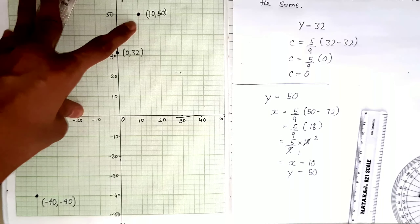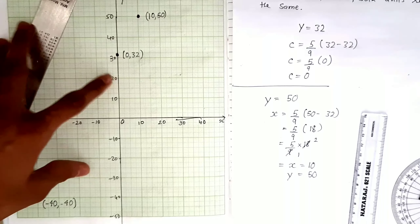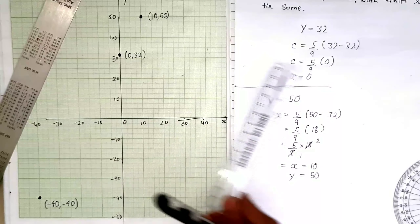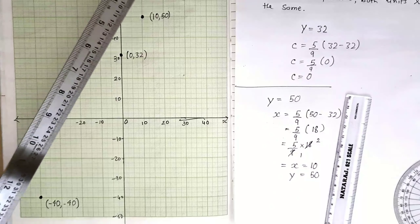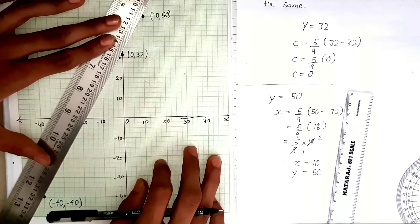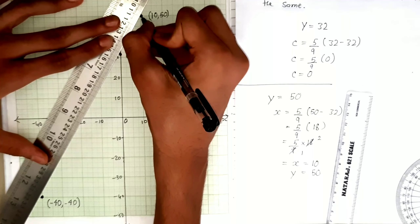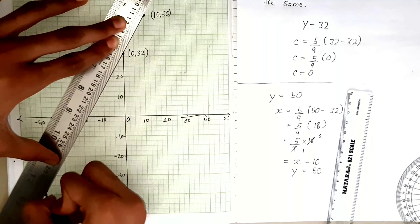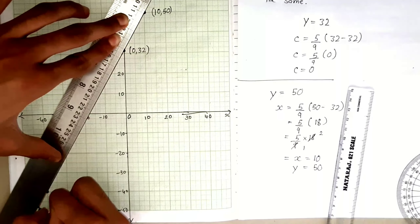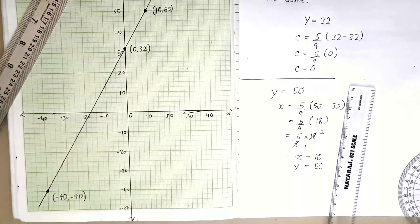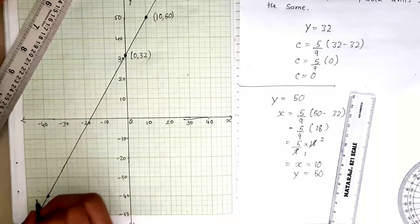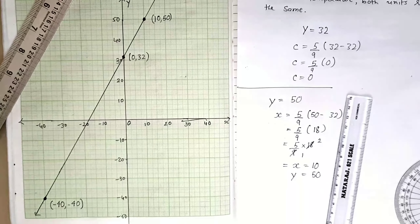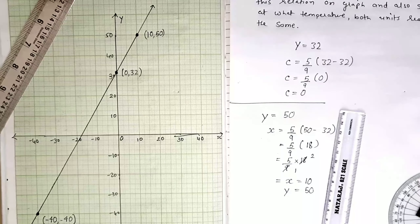Now let's join the points. The small scale wasn't enough, so I've used a bigger scale here and joined all three points. Three points are required to draw the line accurately, as two points may not be precise enough. This line shows the relationship between Celsius and Fahrenheit on the graph. That's it — I hope you liked the video, thanks for watching.